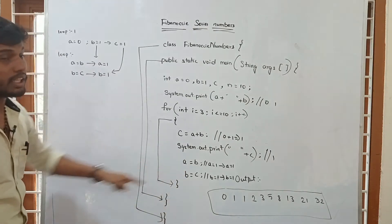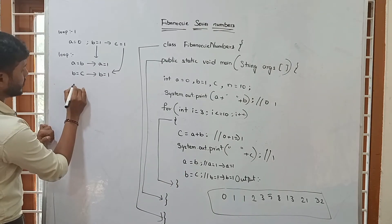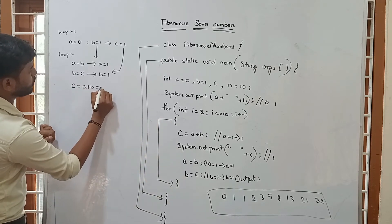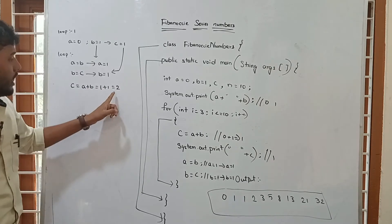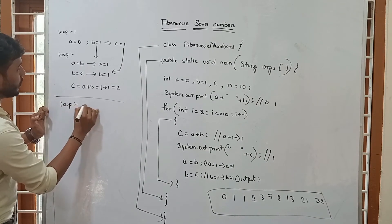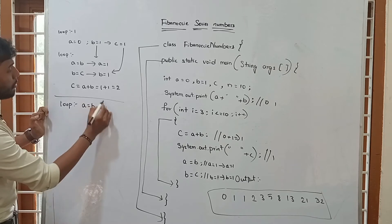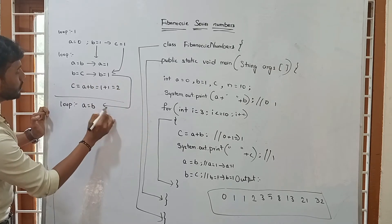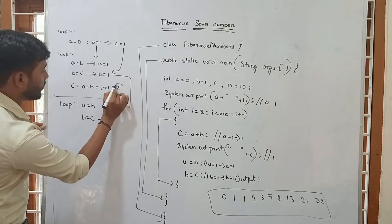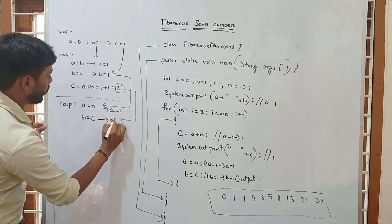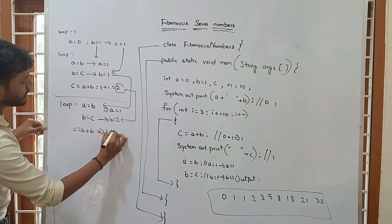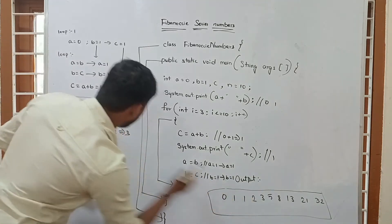The numbers update automatically each iteration. Now C equal to A plus B: 1 plus 1 equals 2, so we get 2. Then A equal to B means A becomes 1. B equal to C means B becomes 2. Next iteration: C equal to A plus B is 1 plus 2 equals 3, so we get 3. Then A equal to B means A becomes 2. B equal to C means B becomes 3. And again C equal to A plus B: 2 plus 3 equals 5, so we get 5.